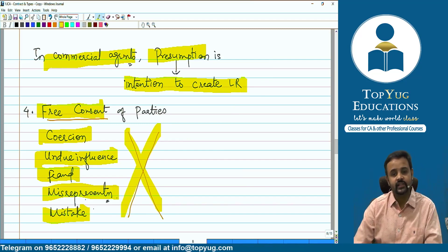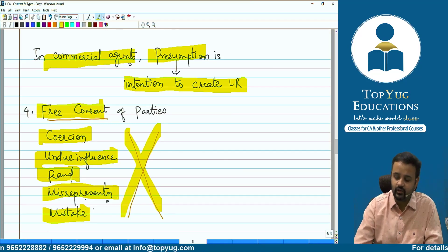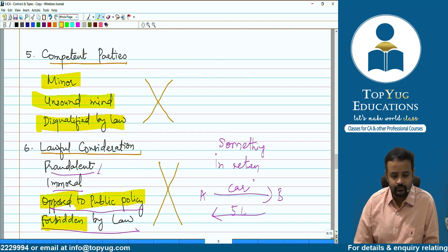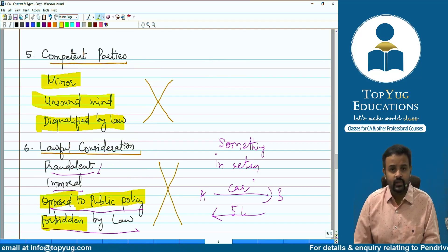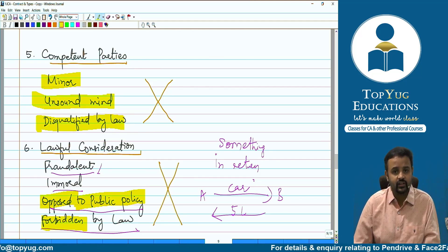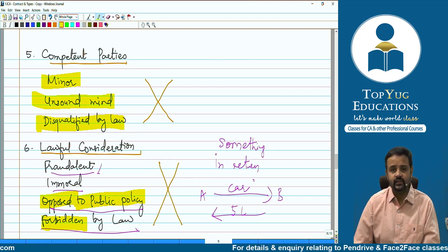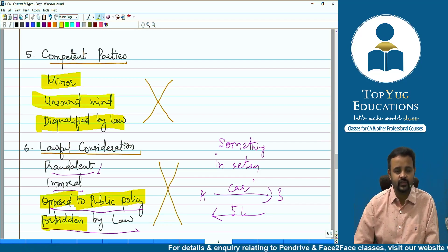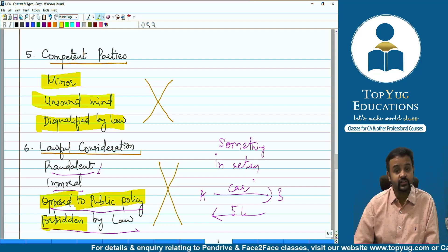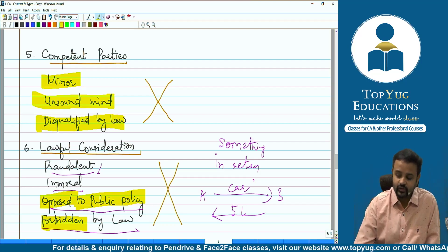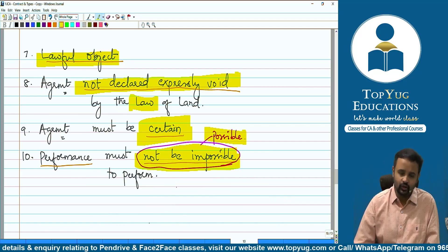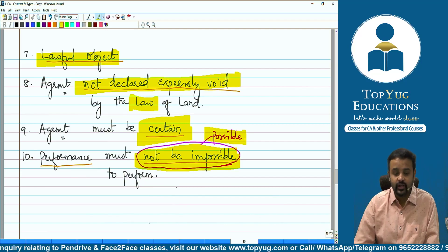Then, free consent of the parties — consent should be obtained freely, not by way of fraud, undue influence, coercion, or misrepresentation. The parties in the contract should be competent parties. Examples of incompetent parties include minors, persons of unsound mind, or persons disqualified by law. There should be lawful consideration — not just any consideration, but lawful consideration. The object also should be lawful. The agreement shall not be expressly declared void by the law of the land.